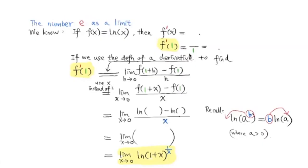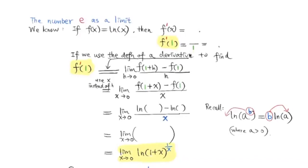If we let f equal ln x, then f prime is equal to 1 over x. The derivative of ln x with respect to x is 1 over x. Substituting 1 into x, we get f prime equal to 1 over 1, which is 1.